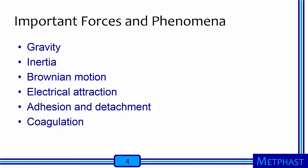We must consider several very important forces and phenomena that dictate how particles behave. These include gravity, inertia, Brownian motion, electrical attraction, adhesion and detachment, and coagulation. As we will see, their importance depends heavily on particle size. These forces and phenomena dictate how particles move from source to sink. They also dictate how air cleaners, like filters, work, and what types of disease develop and in what parts of the respiratory tract.